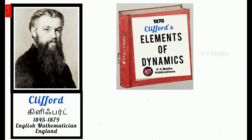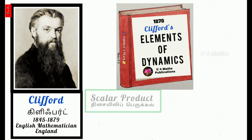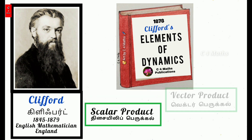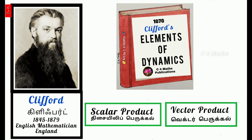Clifford, an English mathematician, in 1878 wrote the book 'Elements of Dynamics.' In that book, he introduced the Scalar Product and Vector Product. Clifford was a professor.